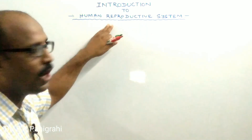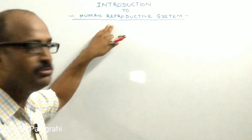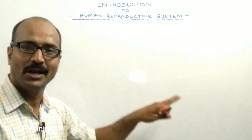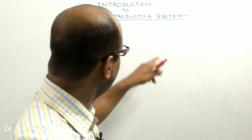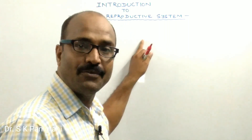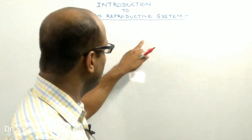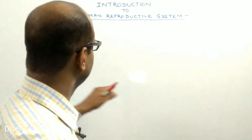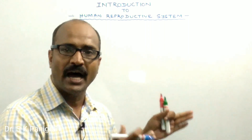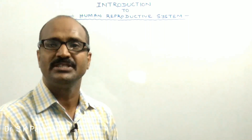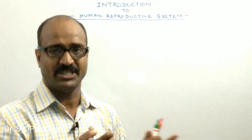What is the meaning of reproduction? The production of new individual from old individual is known as reproduction. The new individual is known as the offspring or the progeny, and the old individuals are father and the mother. The female parent is the mother and the male parent is the father. And the process by which new individuals are produced, this process is known as the reproductive process.